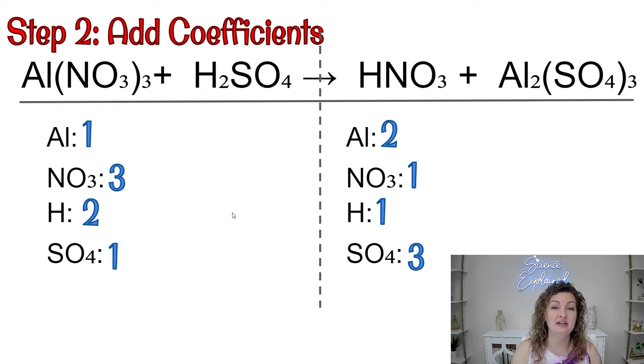Step two, we're going to add coefficients. Reminder, you cannot add subscripts to your equation. So these little numbers, we cannot add them. We cannot take them away. We can only add coefficients to the front of each compound. So let's go ahead and look and kind of evaluate what we have that's already balanced.